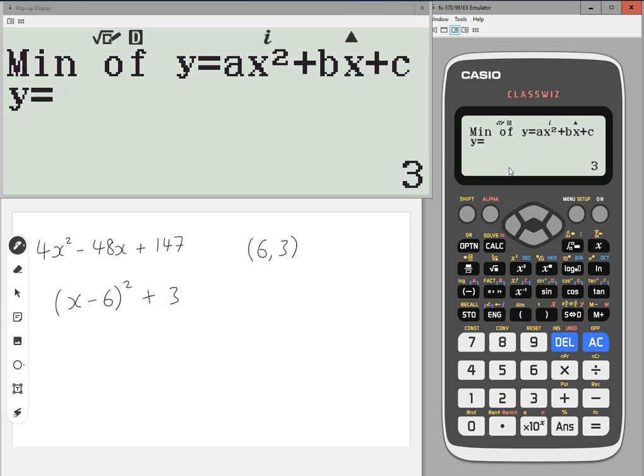Now, of course, this here is not the same as this because one has 4x² and one just has x². Now, you can sort that out by just putting the four in front of the bracket and now they are the same.